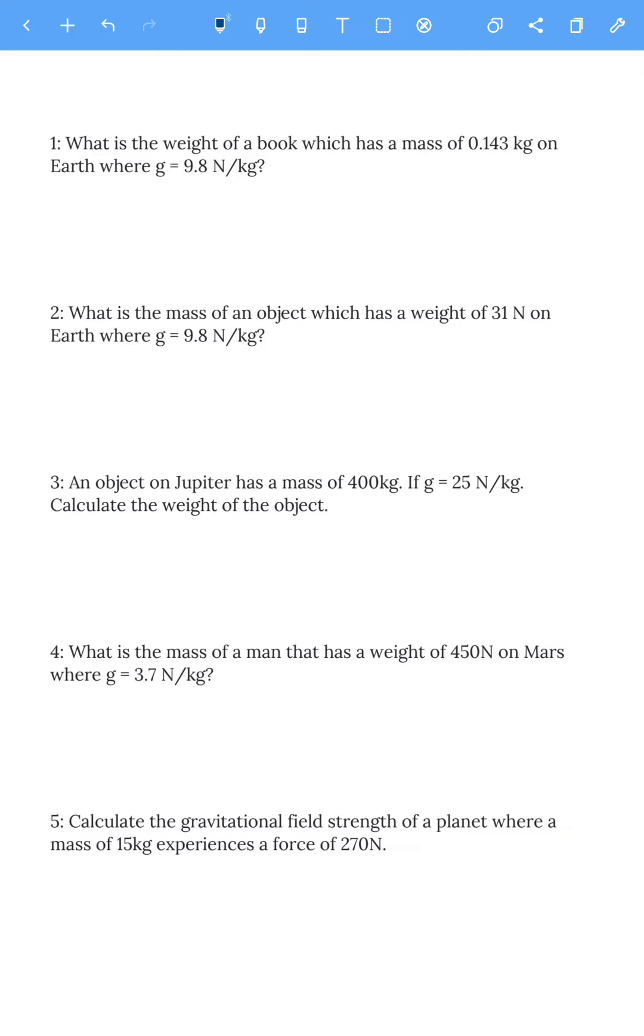Okay, you should have finished them now. Let's work through these quickly. What is the weight of a book with mass 0.143 kg on Earth, where g equals 9.8? Weight is mass times gravity, so 0.143 times 9.8 gives you the weight of this book on Earth, which is 1.4 newtons. That's a very small book.